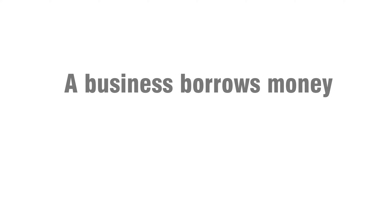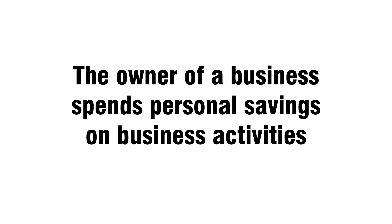Activity three: a business borrows money. Loan account. Activity four: the owner of a business spends personal savings on business activities. Capital account.